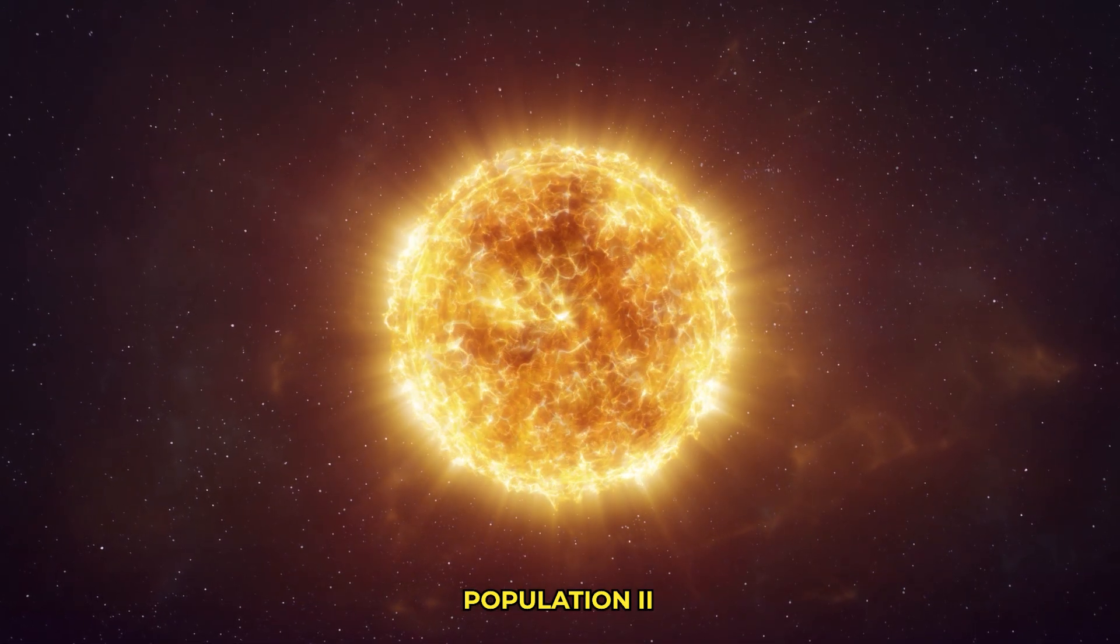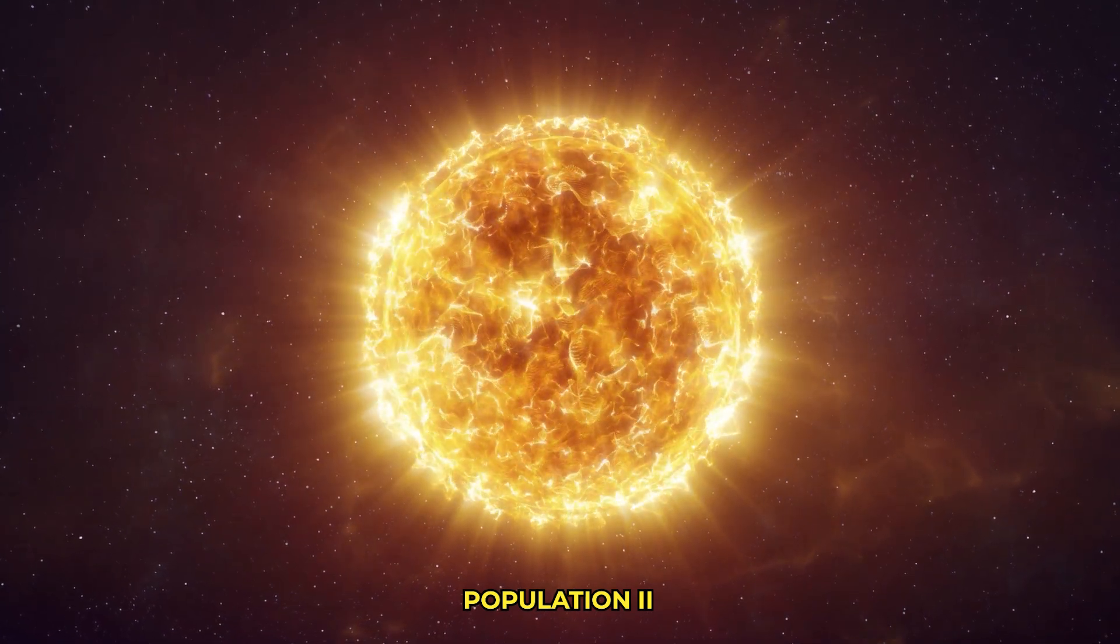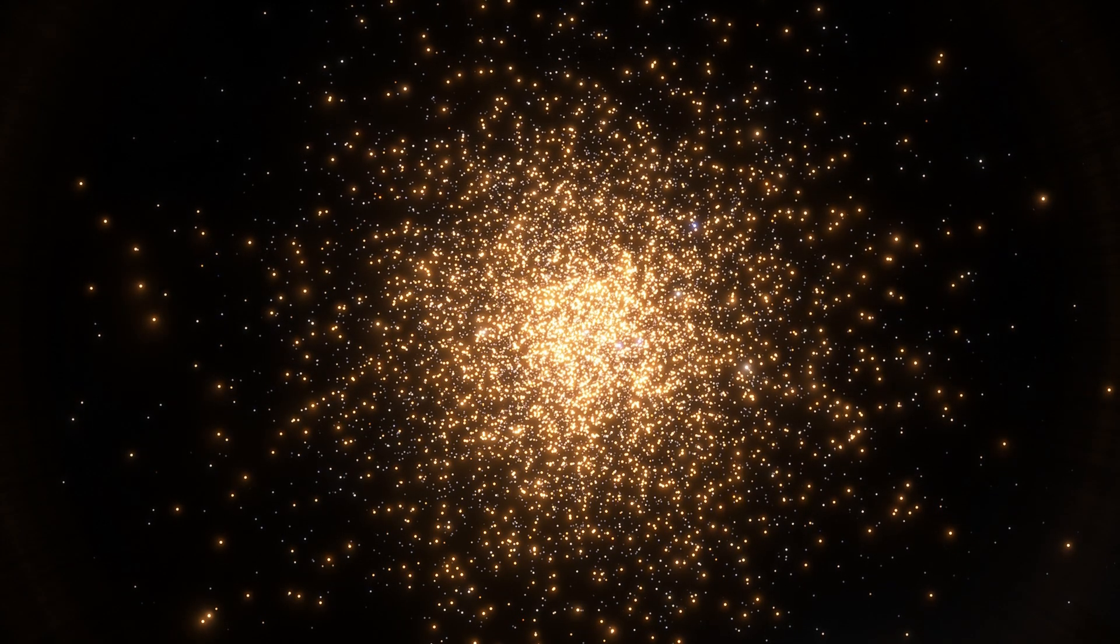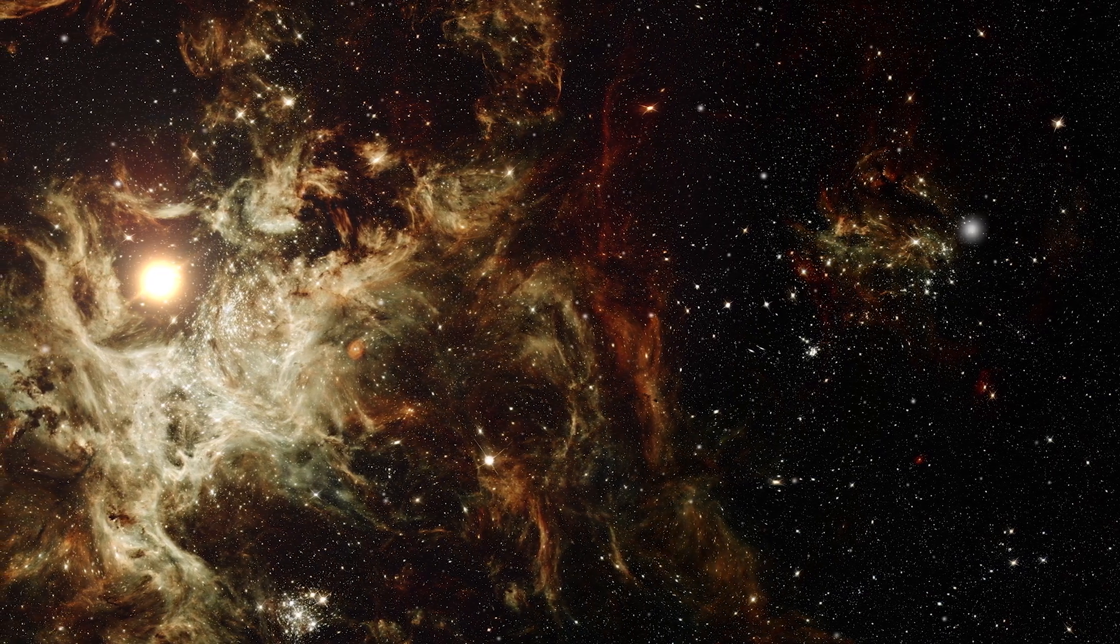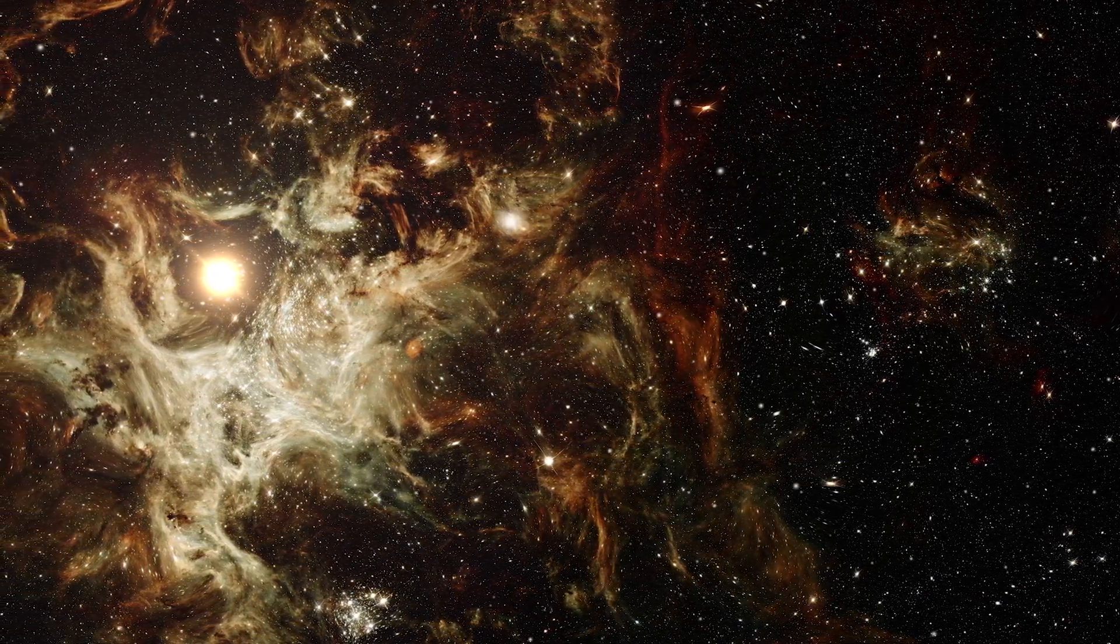Population 2 stars are older stars with lower metallicity compared to Population 1. They are found in the halo of galaxies, in globular clusters, and in the bulge of galaxies. Population 2 stars formed earlier in the universe's history when the interstellar medium had fewer heavy elements.